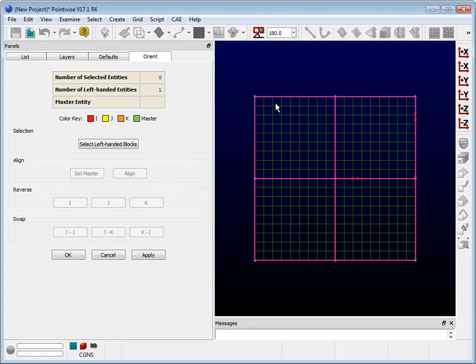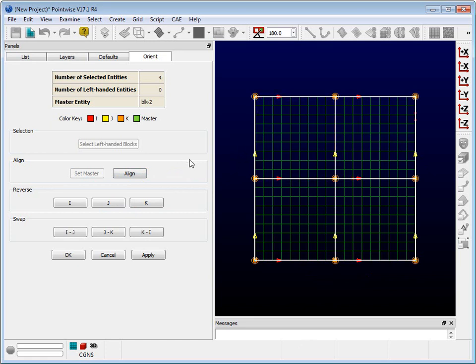All right, now let's select a good block. I will now push the button labeled Set Master. Next I will select all the other blocks, and then push the button labeled Align. This ensures that all of my blocks have a consistent, proper right-hand rule orientation. Your solver can now import these blocks without any problems.